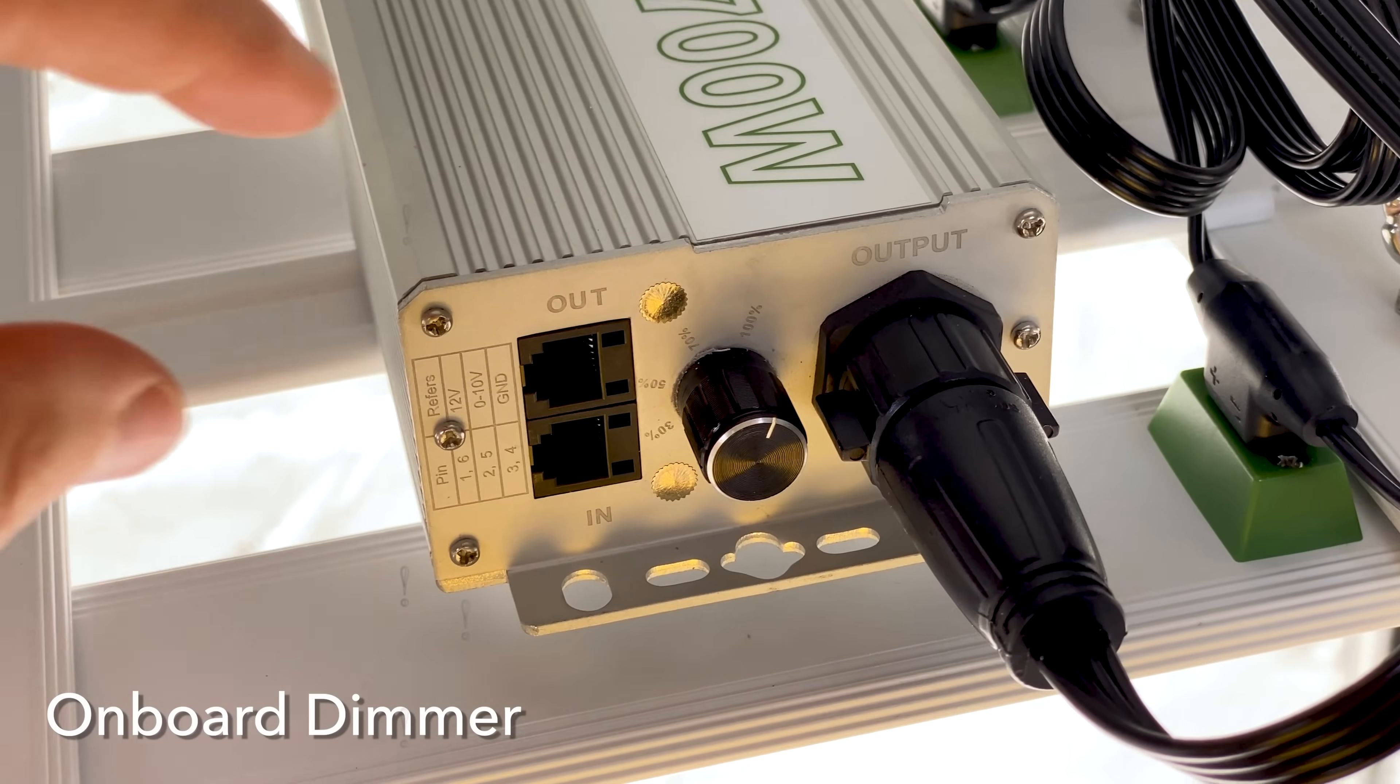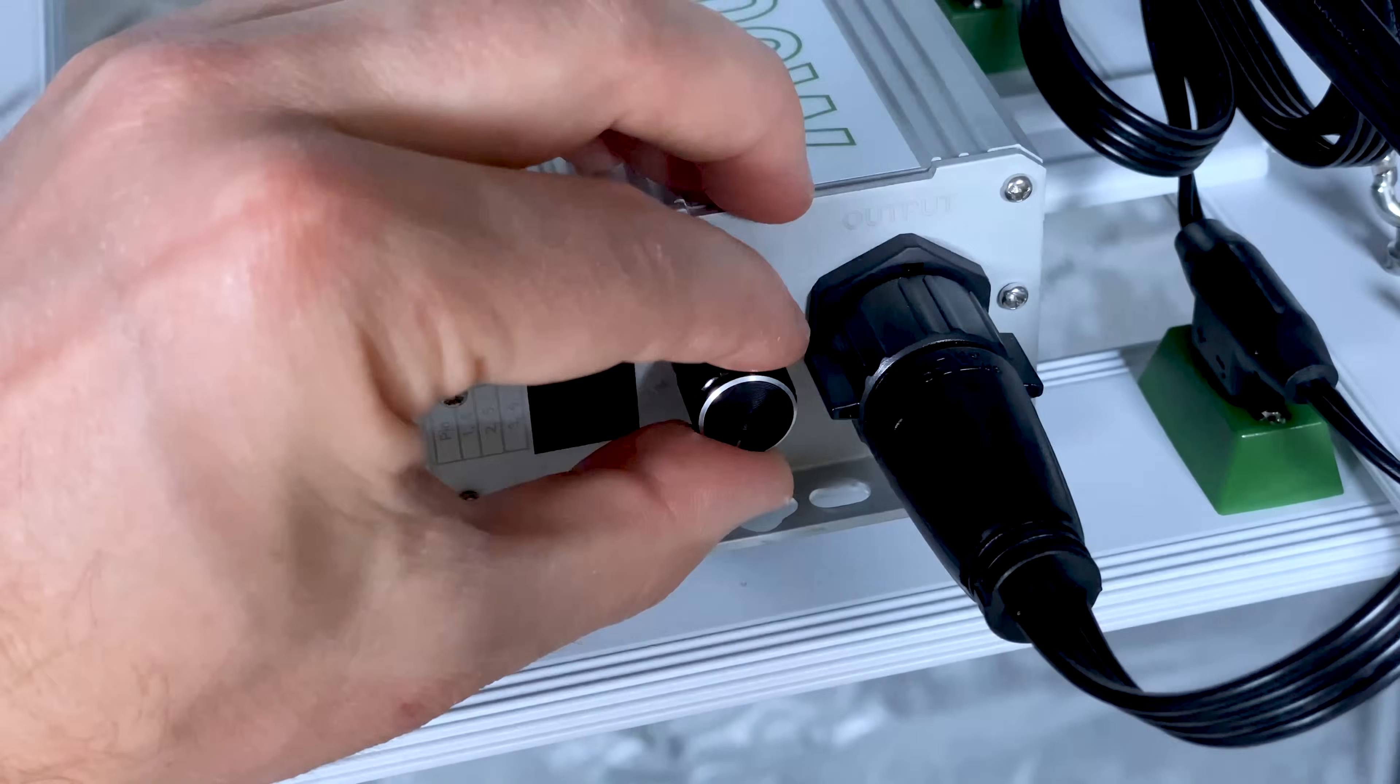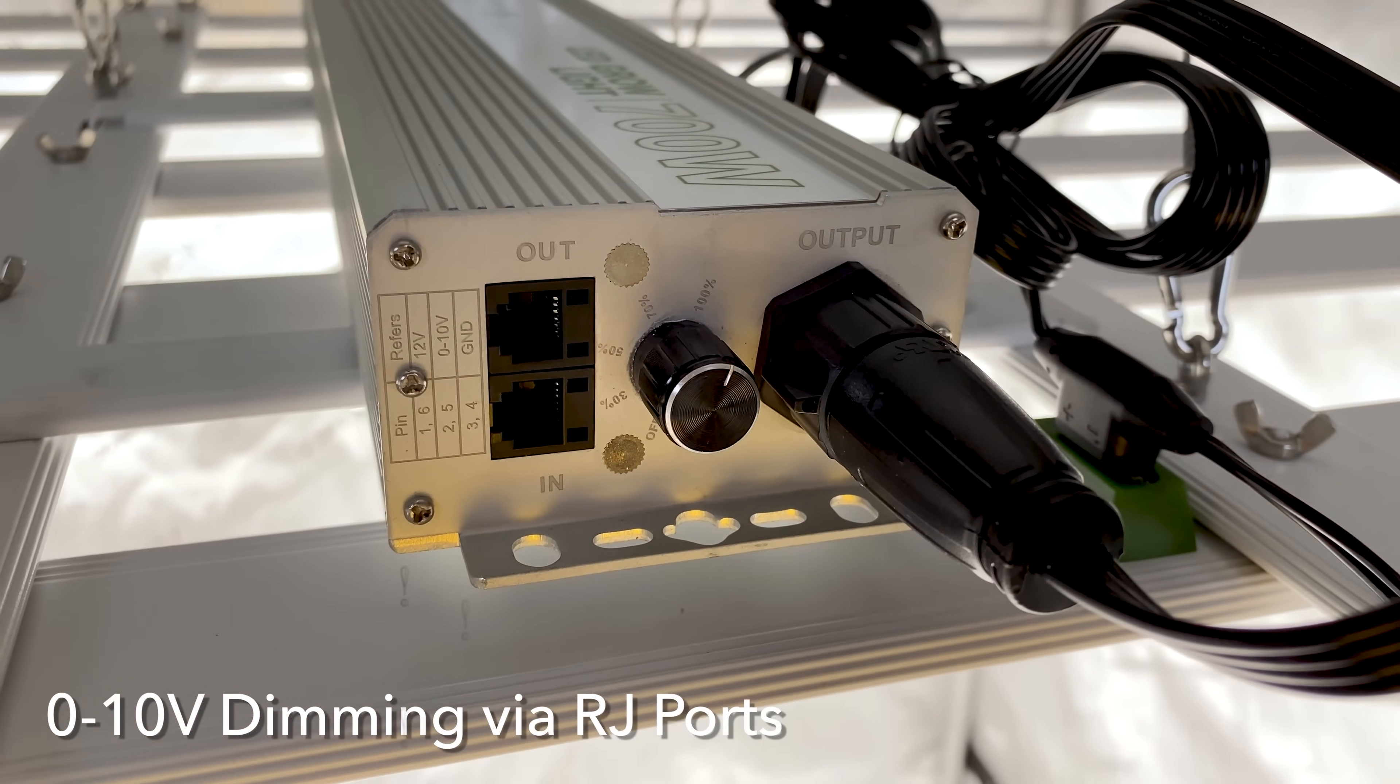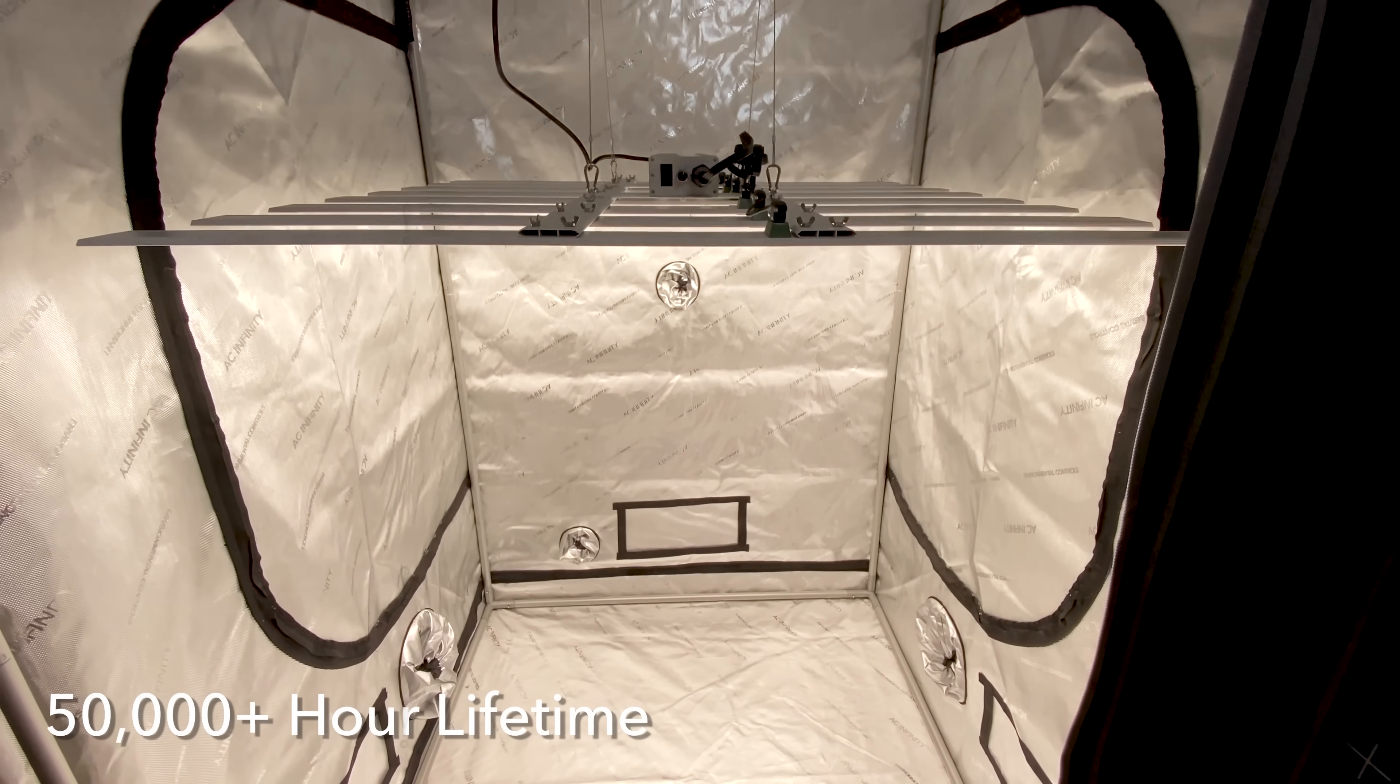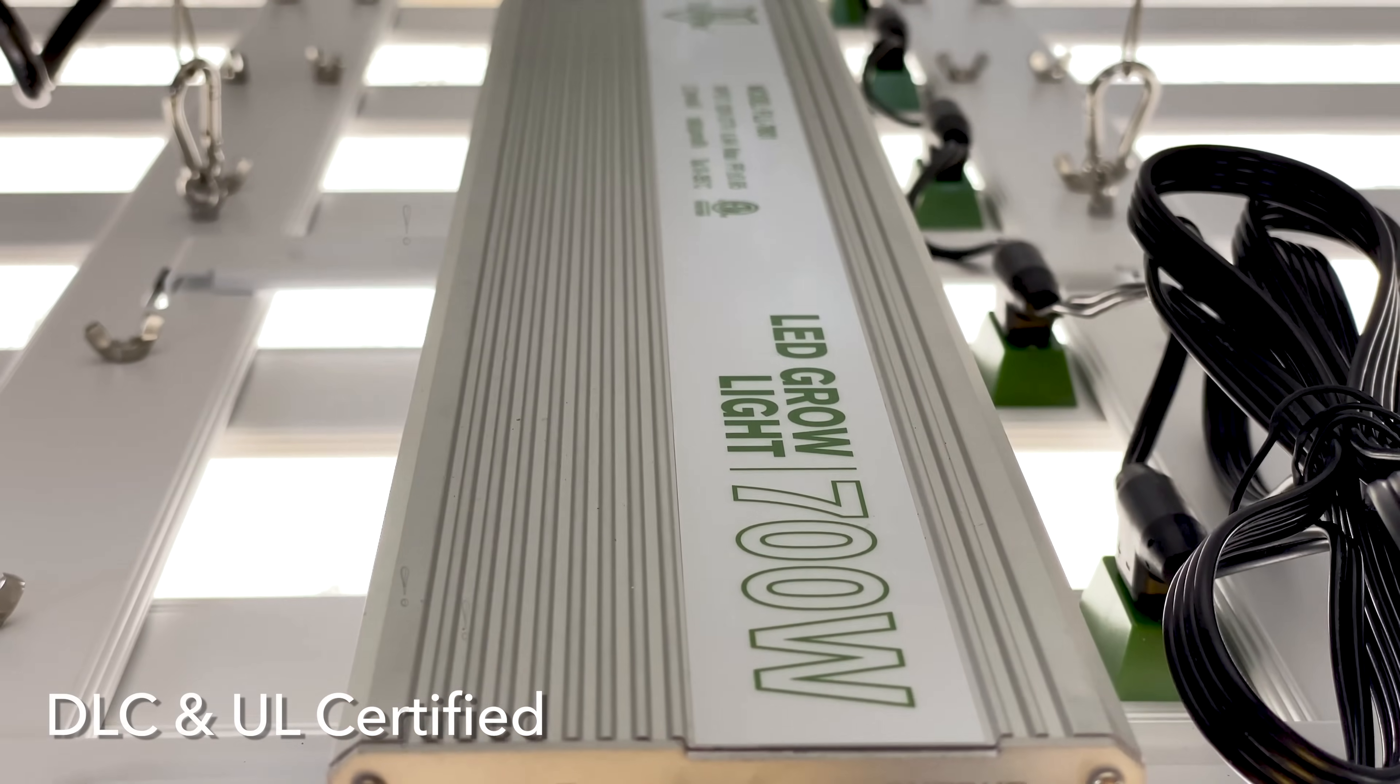The intensity can be adjusted using the onboard dimmer with settings at 100%, 70%, 50%, 30% and off. Additionally, it features 0-10 volt dimming capability allowing you to connect most third party controllers via the RJ ports on the driver. The design also supports daisy chaining multiple lights for larger grow setups. Expect a lifetime of over 50,000 hours from this light. The FloraFlex 700W comes with a 5 year standard warranty and is both DLC and UL certified.